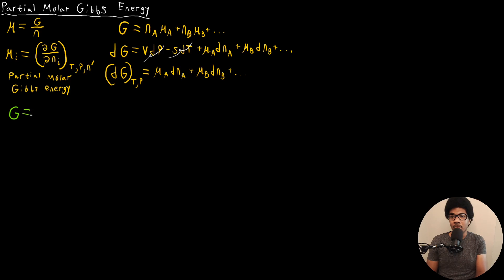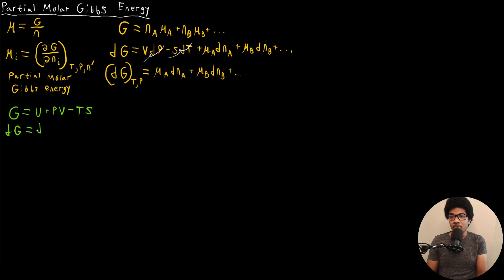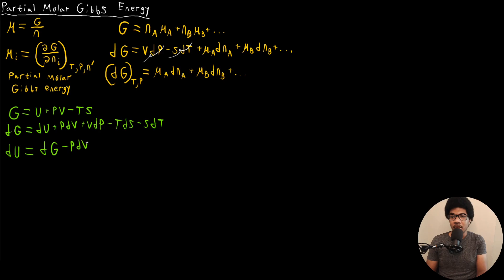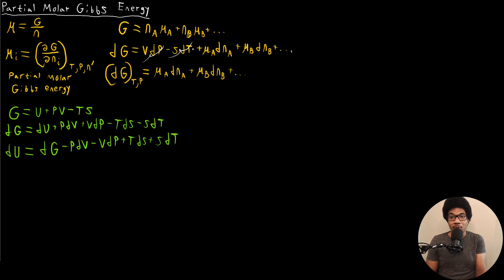We know that the Gibbs energy is equal to U plus PV minus TS. If we take the differential, we get dG equals dU plus PdV plus VdP minus TdS minus SdT. Doing a little algebra to isolate dU, we get dU equals dG minus PdV minus VdP plus TdS plus SdT. We now have this new definition of the Gibbs energy that accounts for varying number of moles, so we can substitute it into our expression for the change in internal energy.